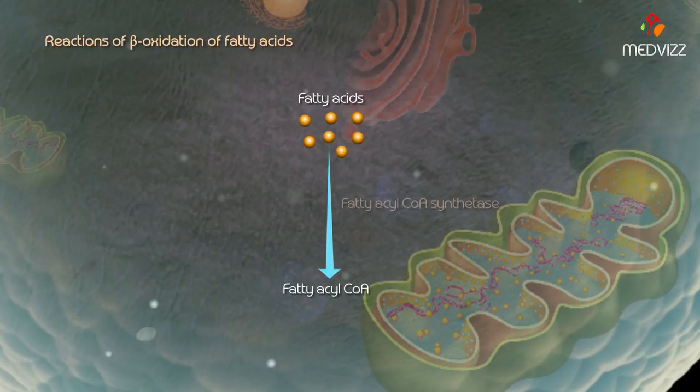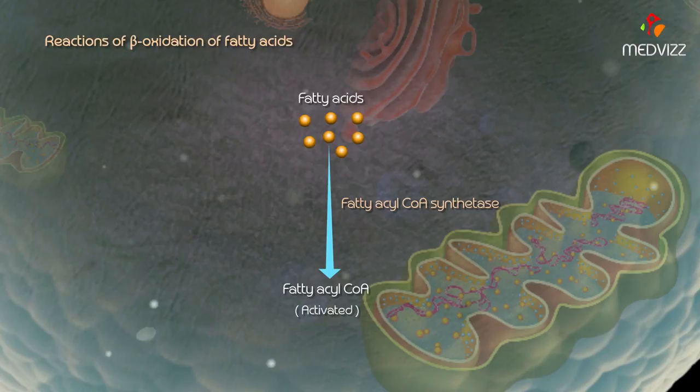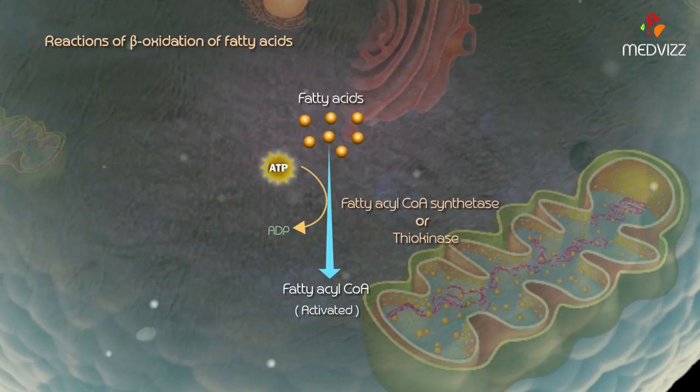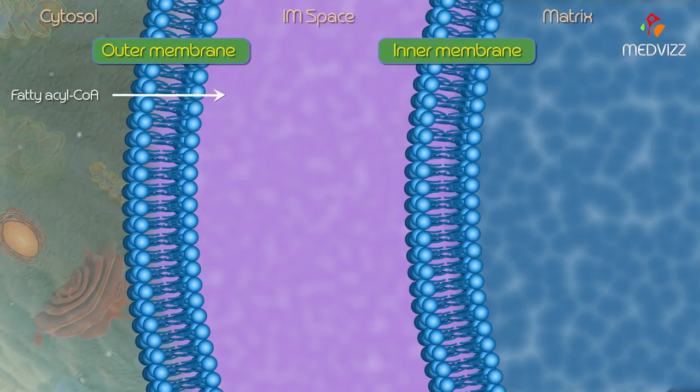The fatty acids are acetylated by fatty acyl CoA synthetase in the cytosol, forming fatty acyl coenzyme A, known as activated fatty acid. The other name of this enzyme is also called as thiokinase. For this we need cofactors like ATP, magnesium, and coenzyme A.